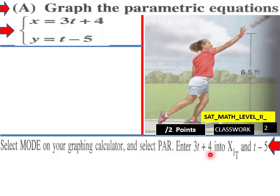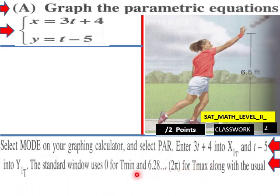Enter 3t plus 4 into X1T and then t minus 5 into Y1T. The standard window uses 0 for T min and 6.28 or 2π for T max.